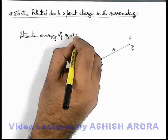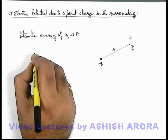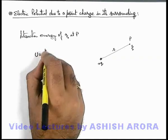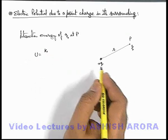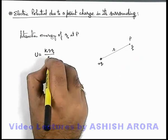The interaction energy of q₀ at P in the electric field of plus q can be directly written down by the expression of interaction energy of two point charges, that is kqq₀/r.